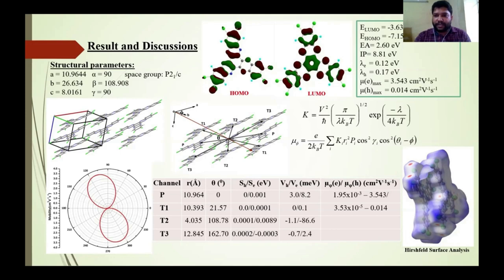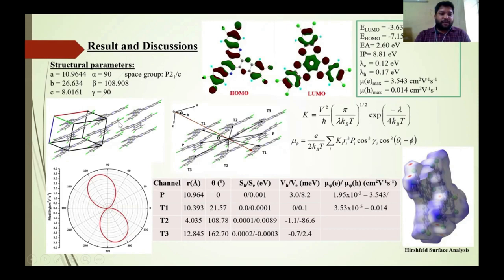Electronic parameters were calculated, including LUMO and LUMO energy. LUMO energy is around -3.63 eV, which is very low, supported by an electron affinity value of 2.6 eV, satisfying the criterion for electron transport characteristics. In the crystal structure, a herringbone pattern is present. Considering two molecules — one center and two parallel — this forms a P channel, through which we calculate the charge transfer integral. We also calculated transverse channels. The angle theta is between the parallel channel and the conductive channel angle phi through which transport occurs.